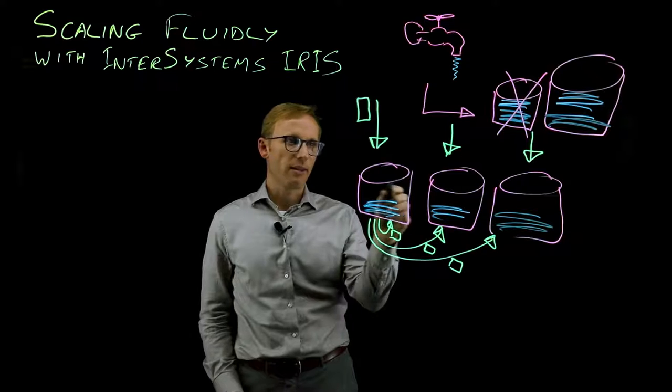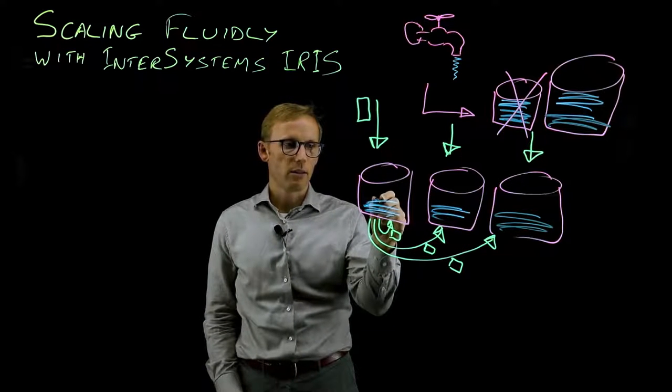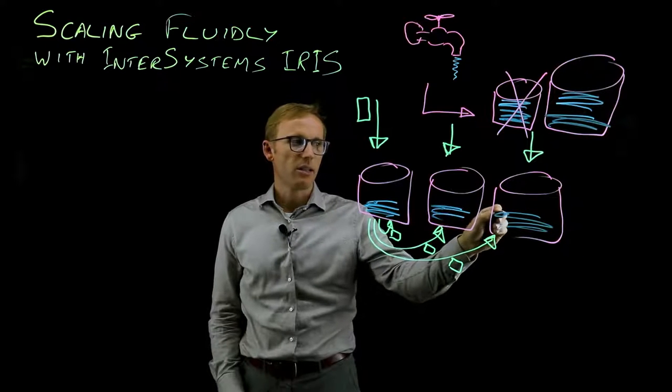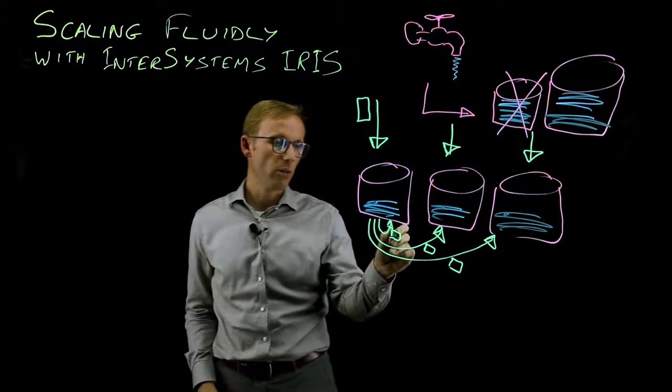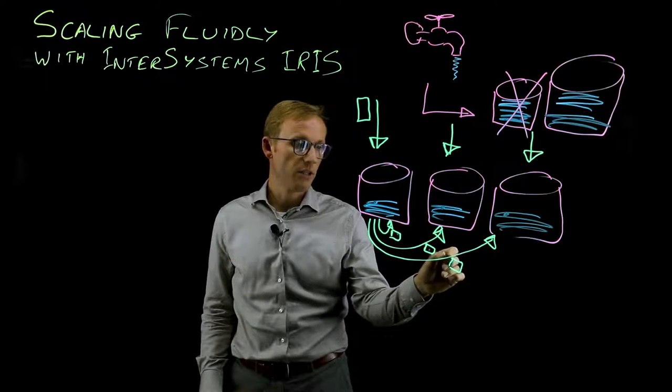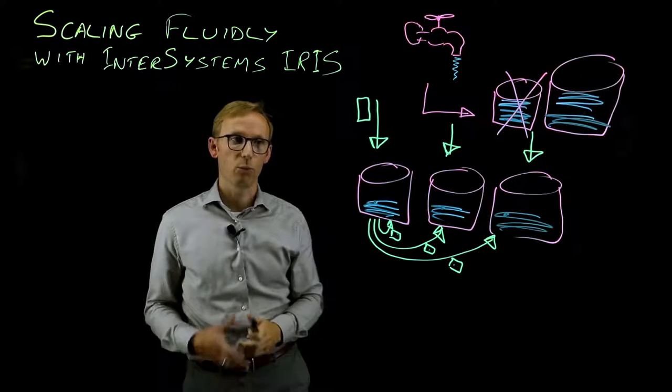In this case, if we distribute our data randomly, that means that data for any given meter can be distributed, can be spread across all machines. Which means that it will also be spread across all of these shard local results. Which means that this recombination part will be a lot heavier.